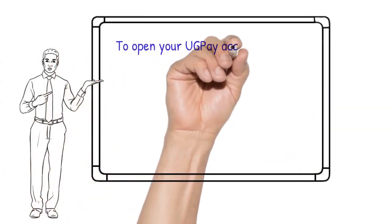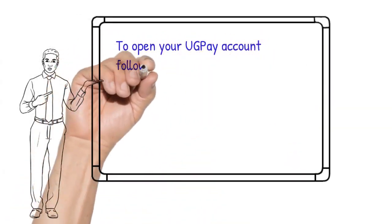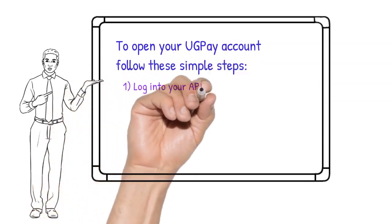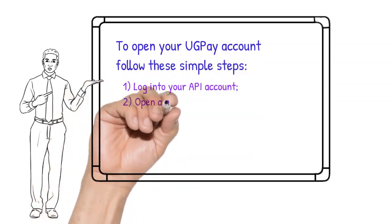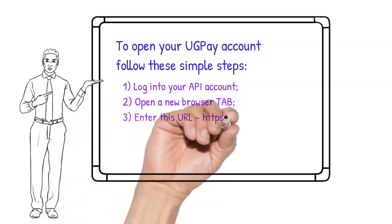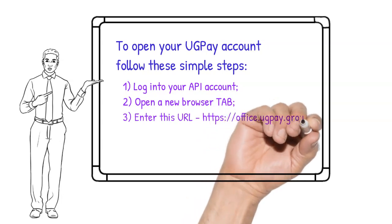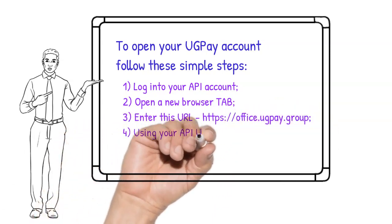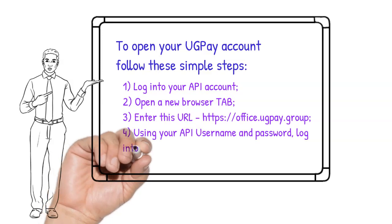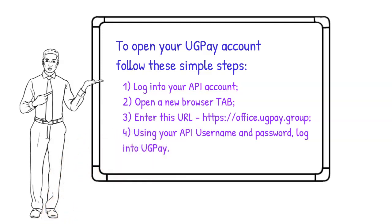To open up your UGPay account, follow these simple steps. First, log into your API account using your username and password. Second, open up a new tab in your browser. Third, enter the URL on the screen. Fourth, use your API username and password to log into the UGPay site. Please note you need both the API and UGPay tabs open in your browser when you log into UGPay for the first time.